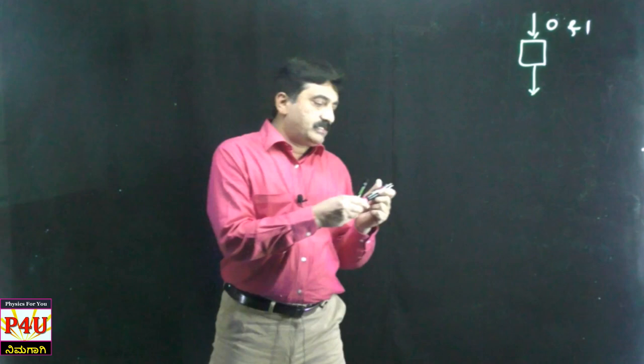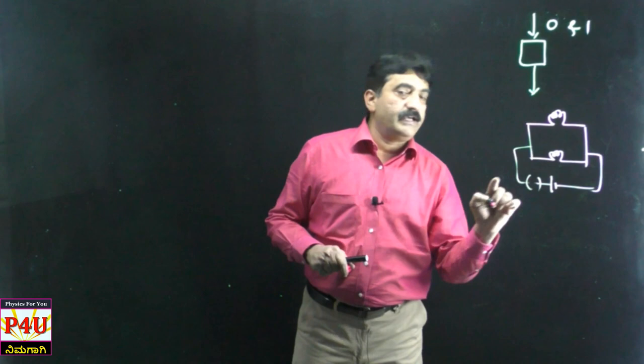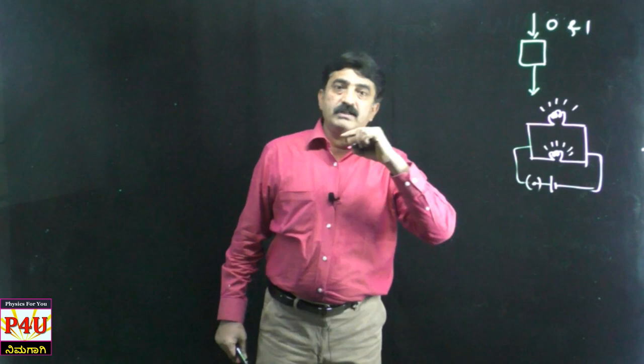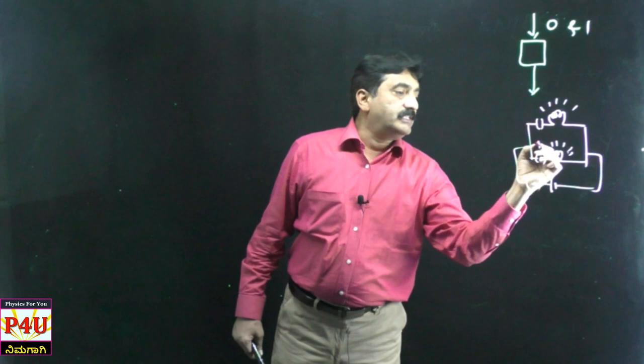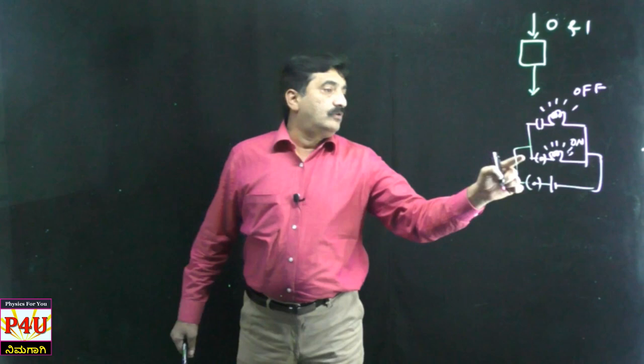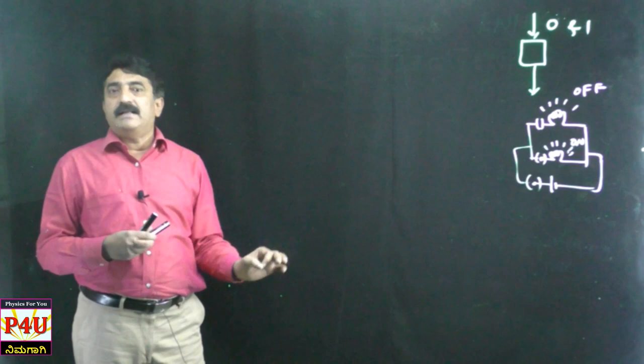If you have a circuit consisting of two bulbs, bulb 1 and bulb 2, and you have a power supply with a switch — if you switch on, both the bulbs will glow, both are in the one state. If this switch is closed and another switch is open, then one is on and the other is off. Switch on, switch off — that's all. Bulbs will glow, bulbs will switch off. So to send some signal, we use this technique.